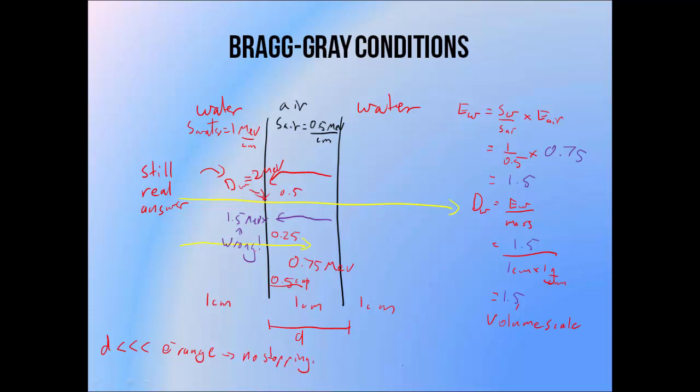This is also why we don't want any changes in electron energy deposition within the chamber — since if it's higher in one part of the chamber than in another, we can't accurately apply volume scaling. So the electron range must be much larger than the dimensions of the chamber. Electrons shouldn't stop inside the ion chamber, and we don't want any electron energy changes inside the chamber either, otherwise the Bragg-Gray relation combined with volume scaling will give us an incorrect result.